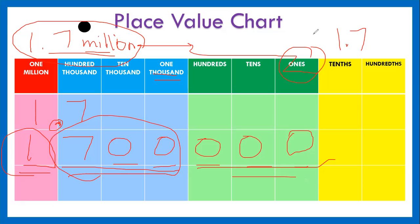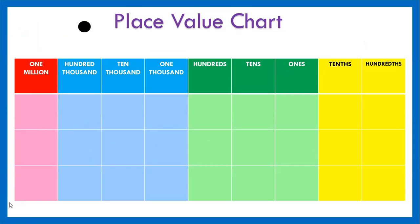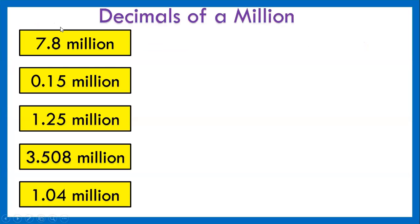Let's clear this and move on to some examples. We have 7.8 million. There is another shortcut method. Once you know how the place value, where is this number on the place value, you can use a shortcut method. Many a times, they will just tell you, multiply the million, the decimal million, by 1 million.